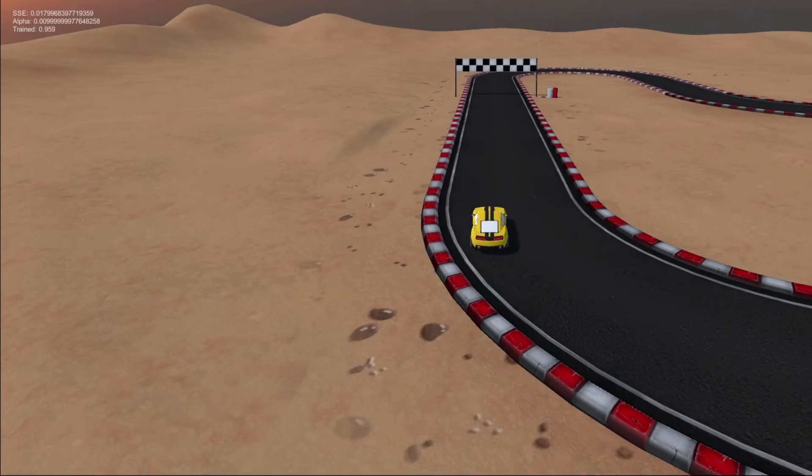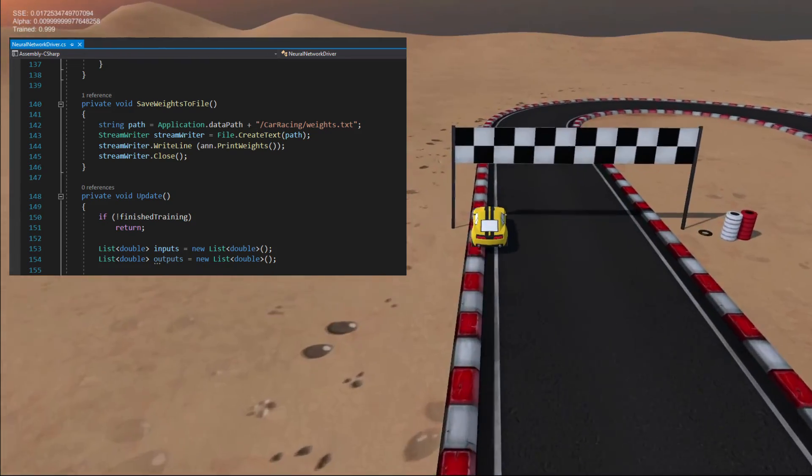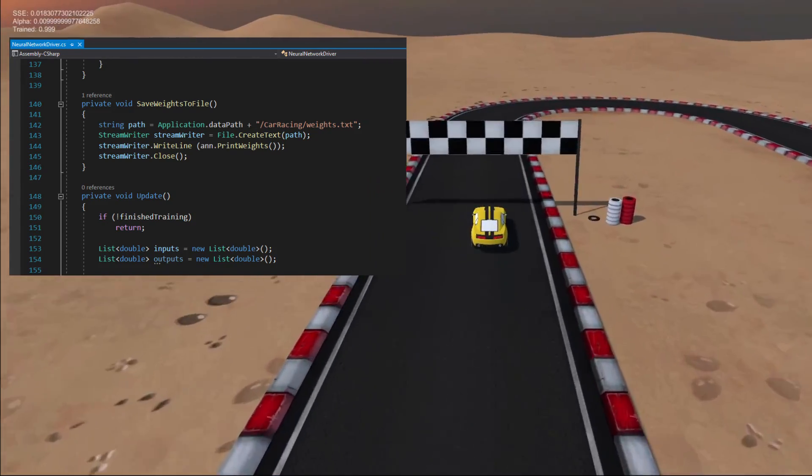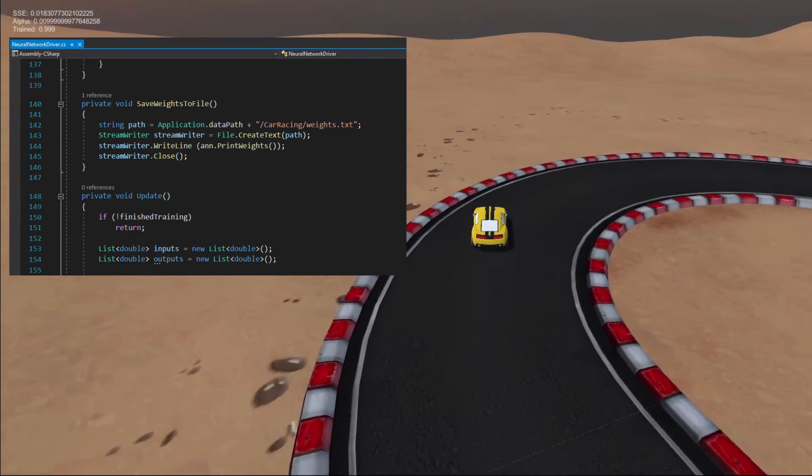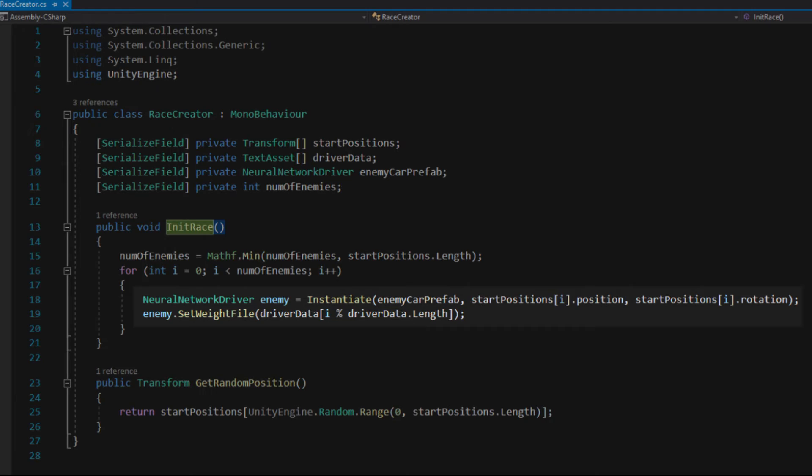Not every training results in a successful run, so every time it did I saved the network's weights to file so that the AI car could just load them on demand. To finish off I created a simple race manager that spawns AI cars and passes a text file with weights to load into a neural network to these cars.